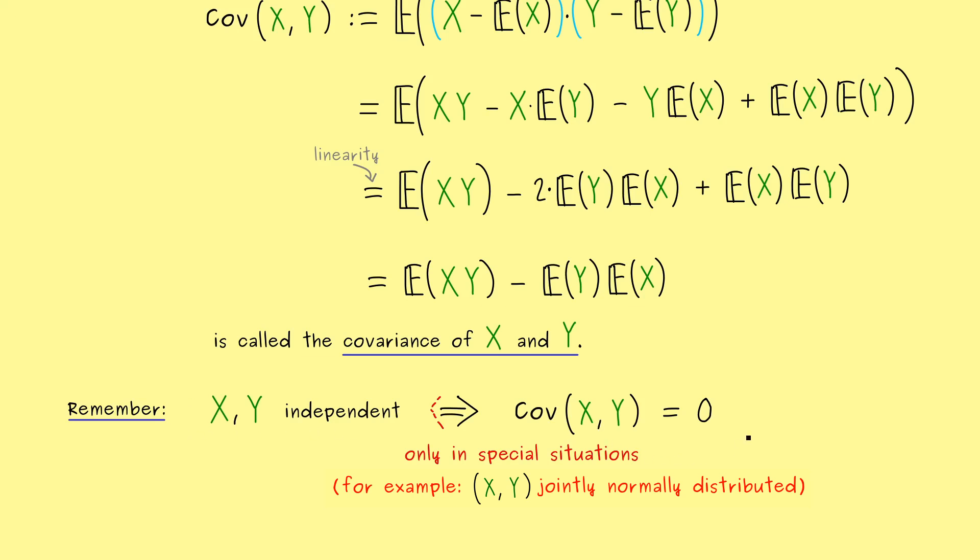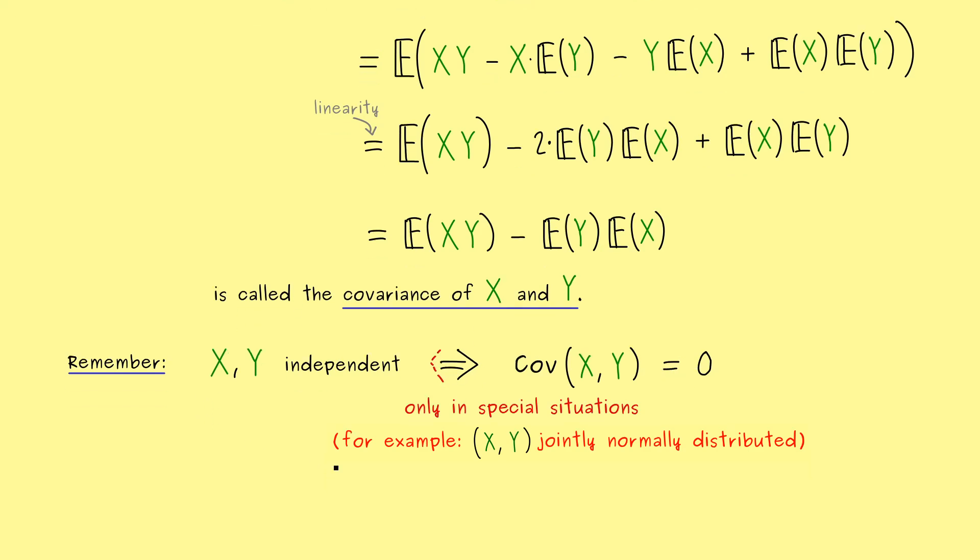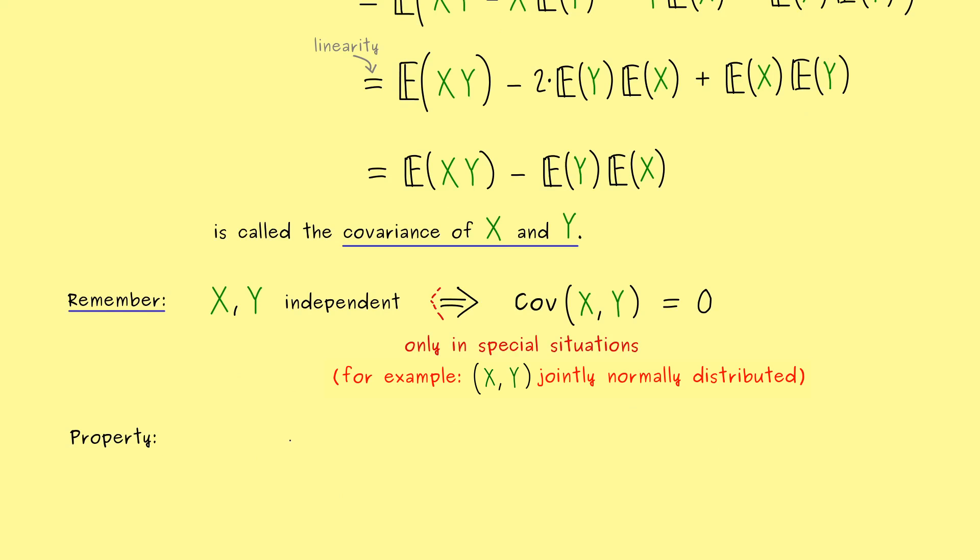Nevertheless, we always have the contraposition here, which means, if the covariance is not zero, the variables are not independent. However, now the question is, do we also know how much they are not independent? There, the covariance might be misleading, because X and Y for themselves could already have very big variances. Therefore, we need some kind of normalization to actually get a measurement for uncorrelated variables.